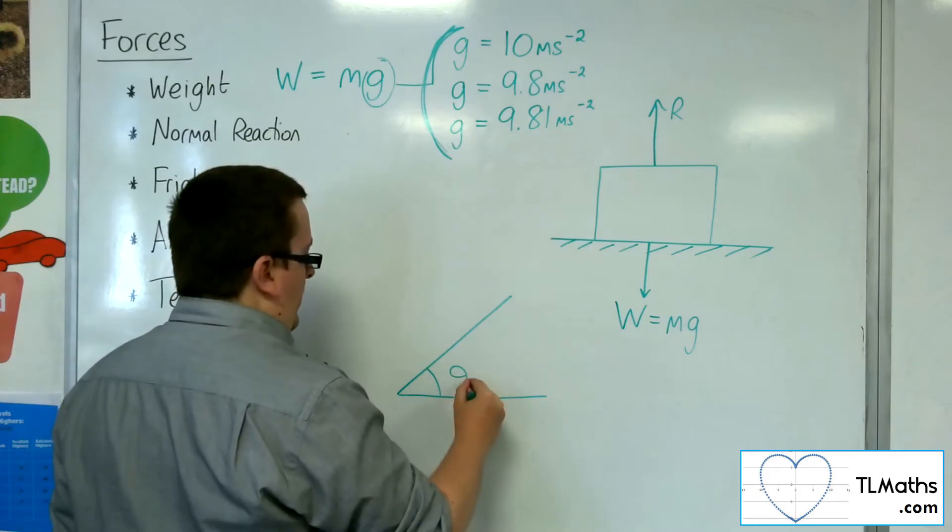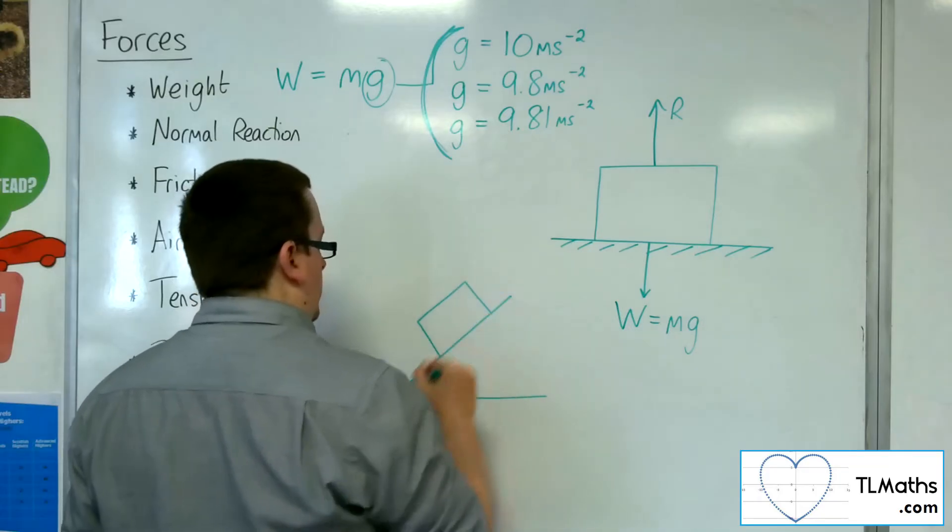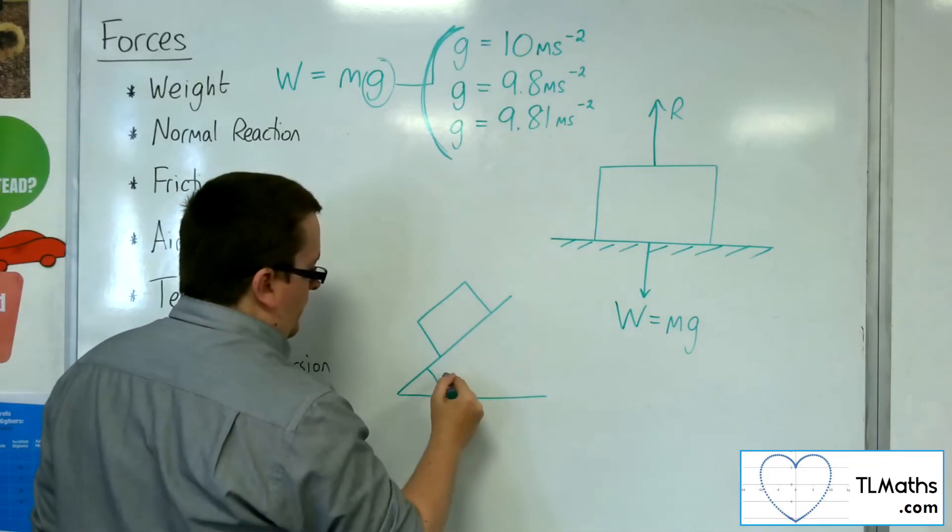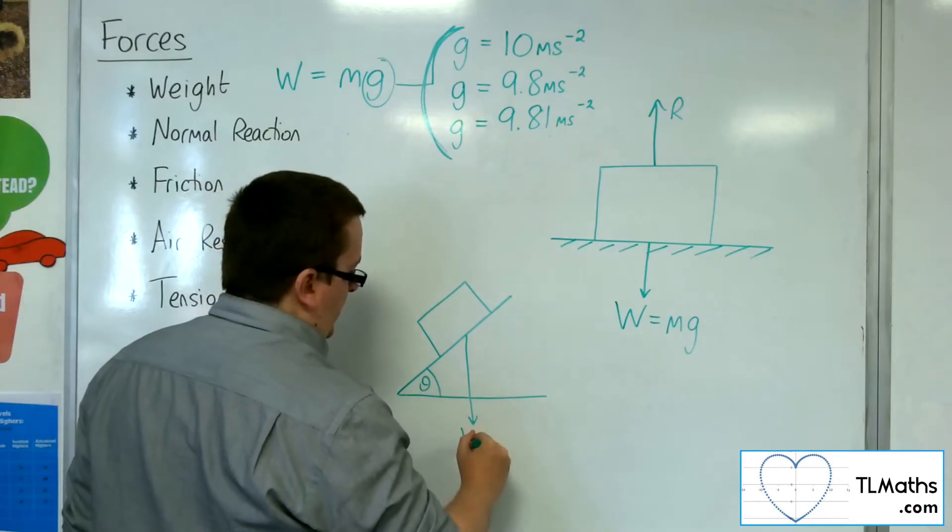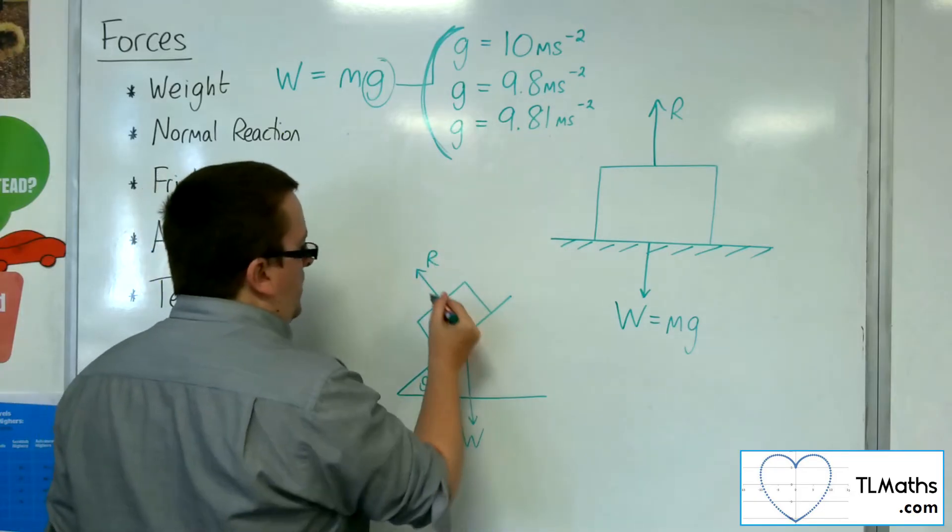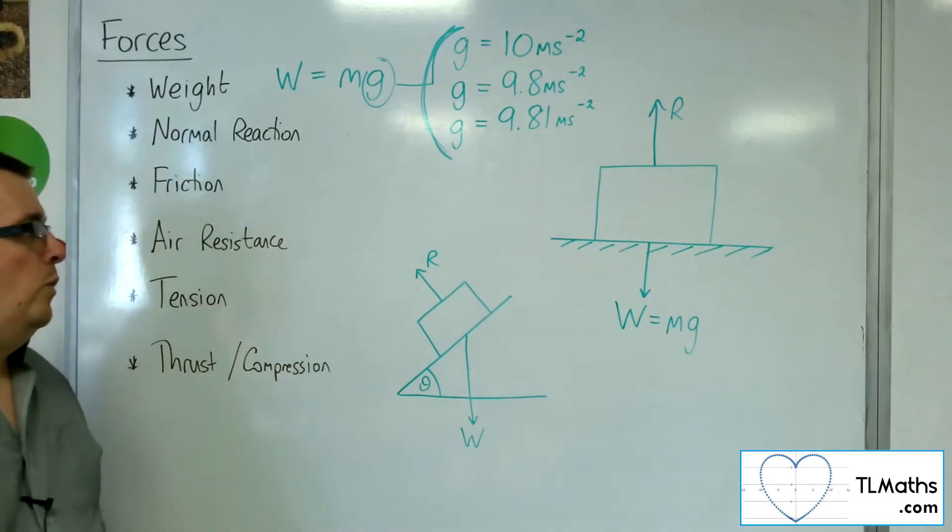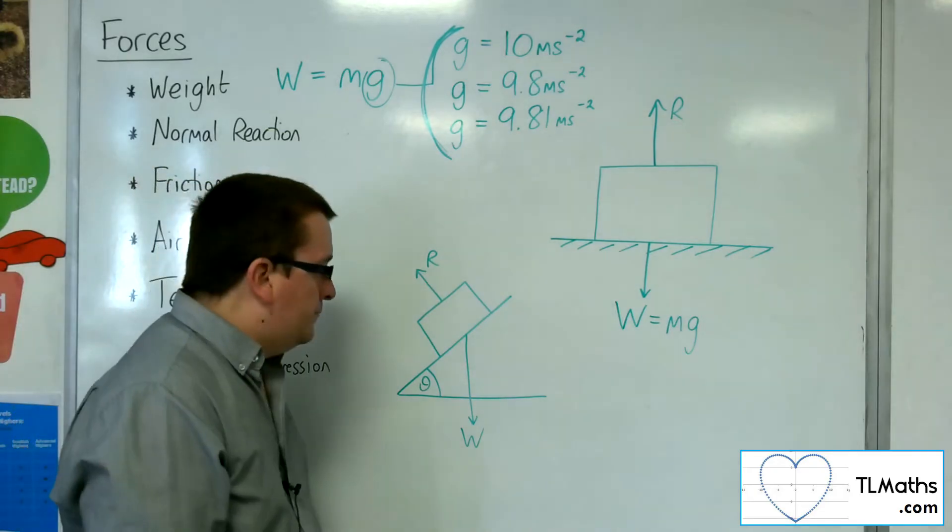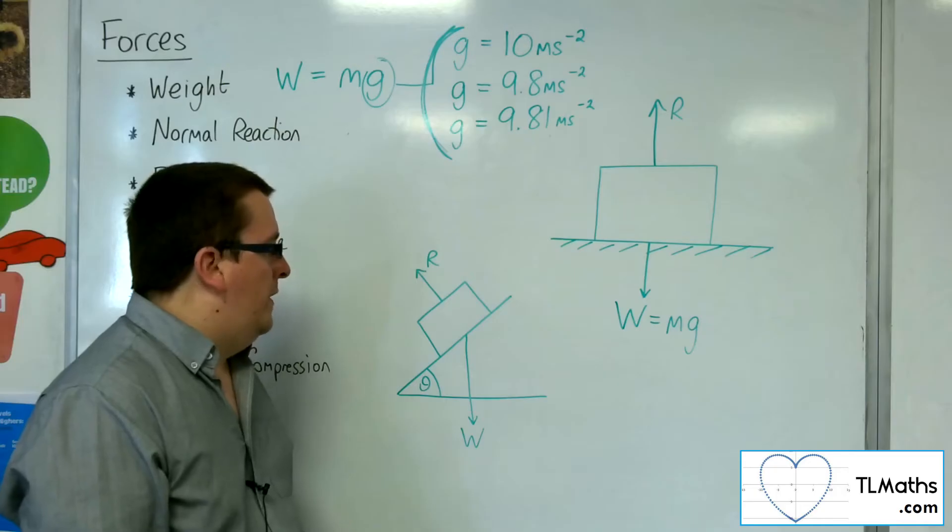Now that causes there to be a discrepancy when the box is on an inclined surface, for example. So let's say we have a slope, and here is the box. Let's just rewrite that theta, so there's theta. The weight will work vertically downwards, whereas the normal reaction force will be perpendicular to the plane. So that is where the difference lies there.